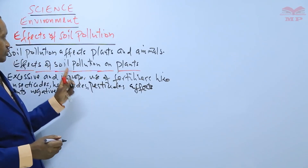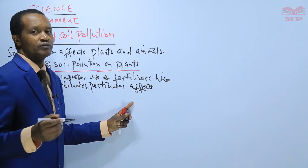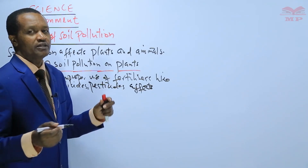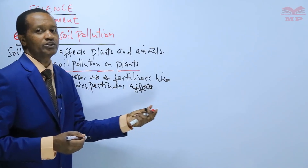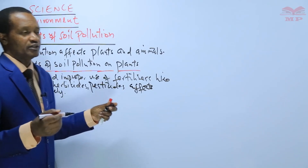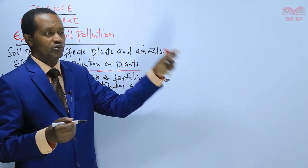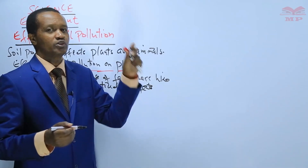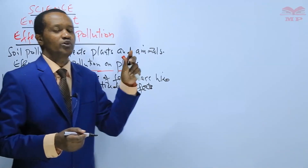That is one effect of soil pollution on plants. Number two: glass materials. Remember we talked about glass materials, polythene papers, plastic bottles, metals, and metal remains. All these substances emitted into the environment by industries or factories — these solid substances do not rot in soil; they do not decompose and stay in the soil for a long time.